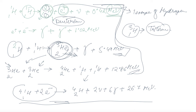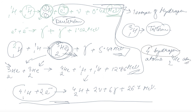Therefore, what you can observe is that 4 hydrogen atoms combine to form one He-4 atom, with a release of 26.7 MeV of energy. This is what is happening in our Sun.